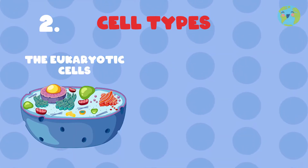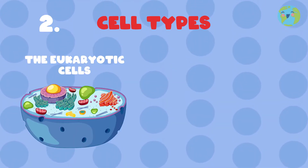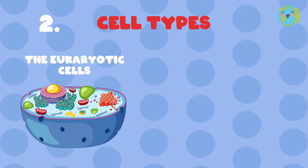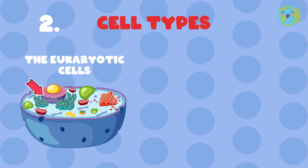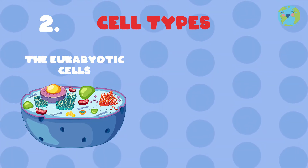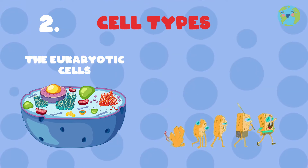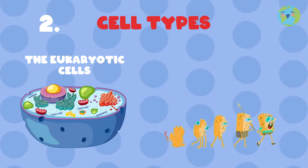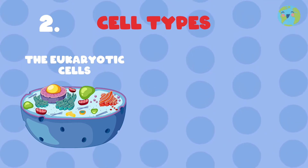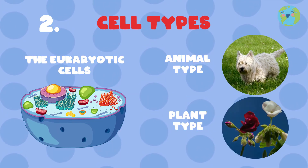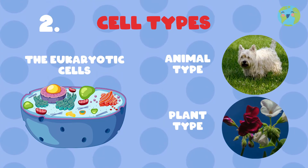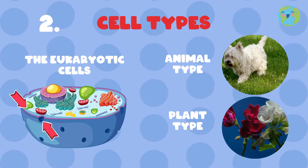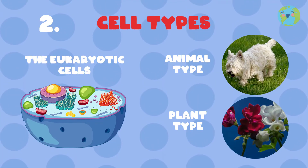Eukaryotic cells are characterized by being larger than prokaryotic cells, by having a nucleus defined by a membrane, and by being more complex and specialized cells, since they contain part of the evolution of living beings. Eukaryotic cells in turn can be animal and plant type, and inside they are made up of organelles, which are like little factories that help plant and animal cells to function properly.